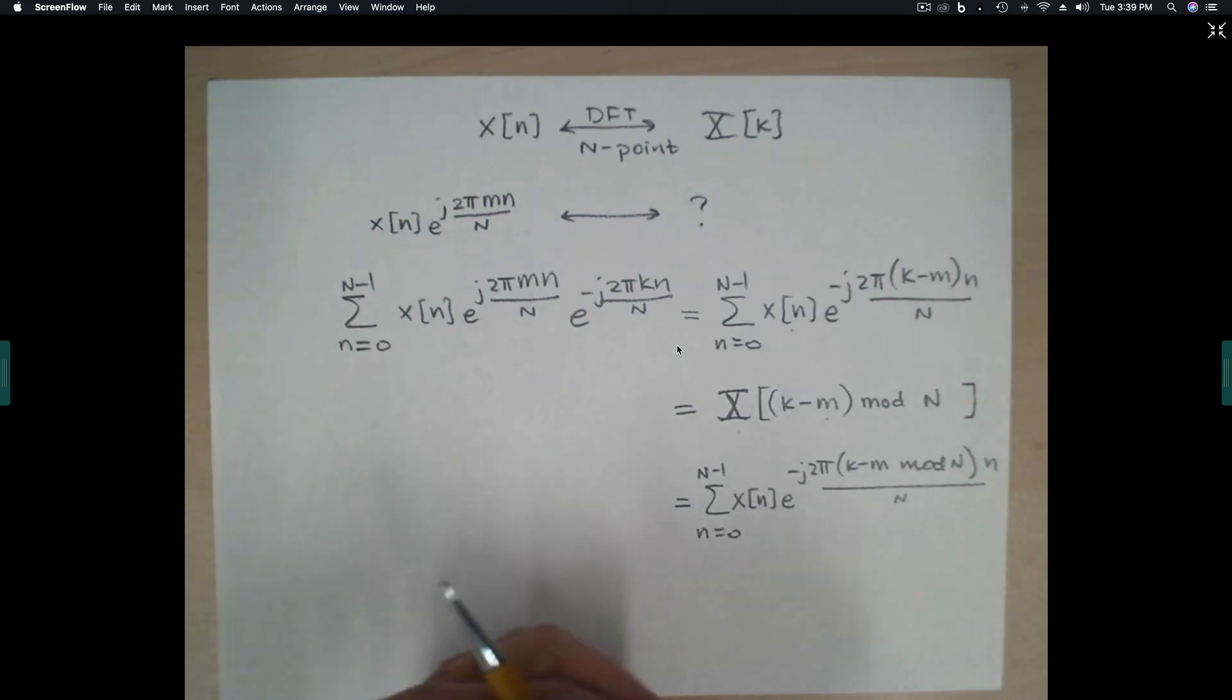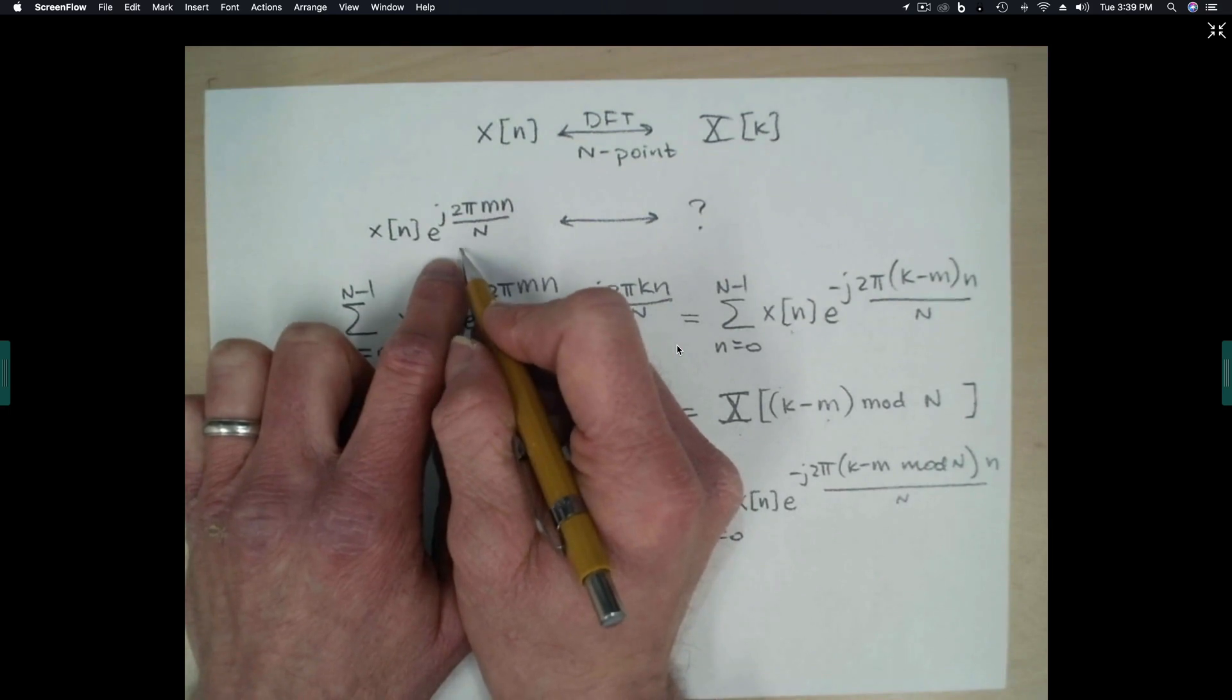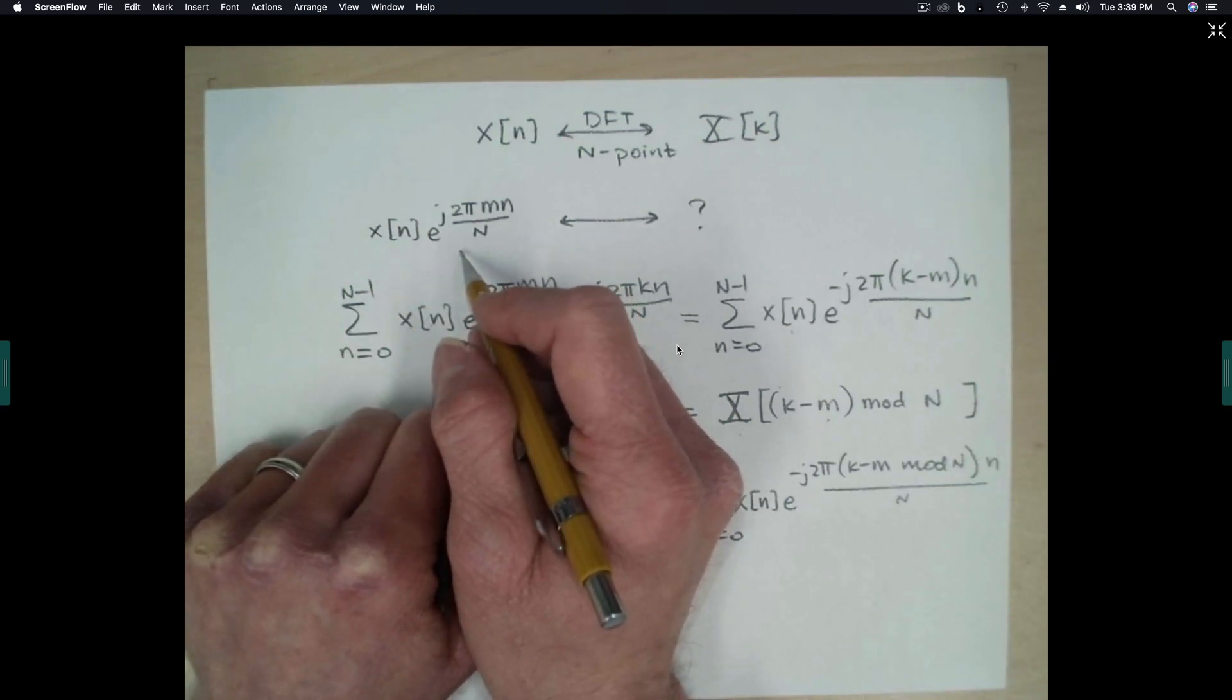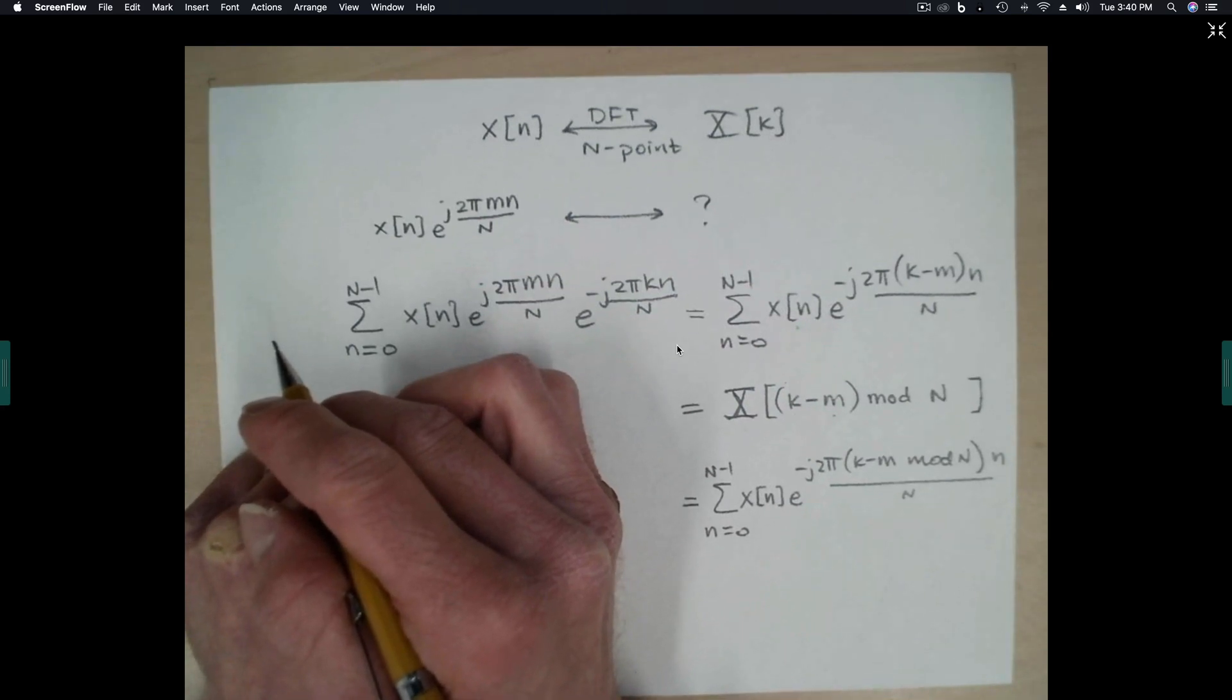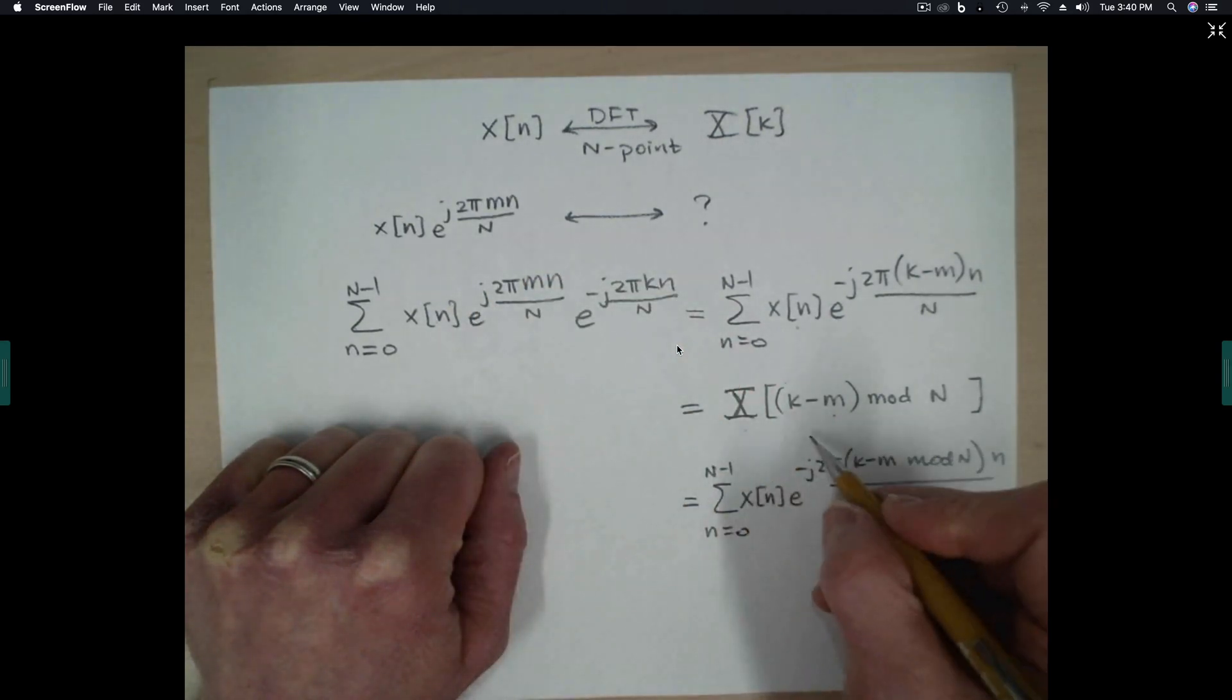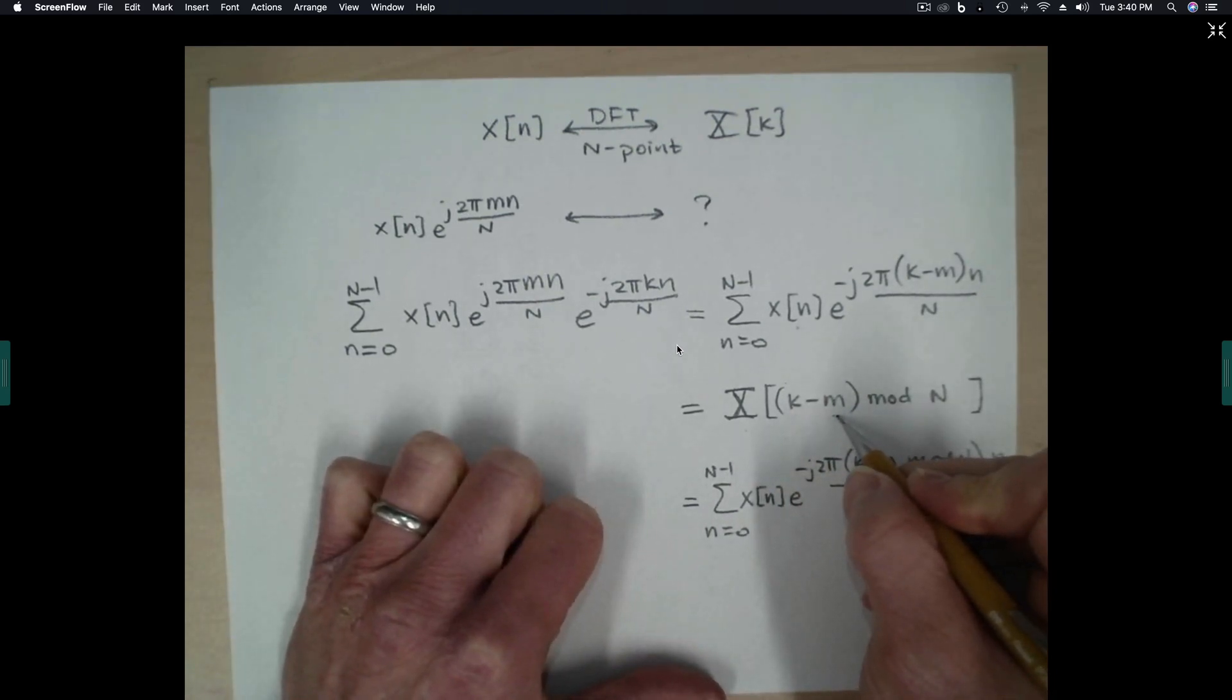So we've seen a property like this before with the continuous time Fourier transform and with the discrete time Fourier transform. When in the time domain we multiply by a complex exponential, normally in the frequency domain we get a shift, a frequency shift, where the shift in frequency is equal to the frequency of the complex exponential. With the DFT, it's a little bit different from that. When we multiply in the time domain by a complex exponential, we end up doing a circular shift in the frequency domain, in the DFT domain, but it's a circular shift, not a linear shift.